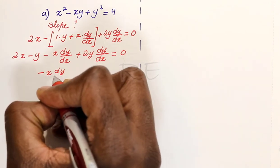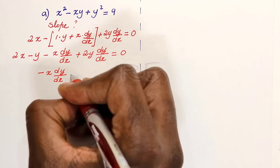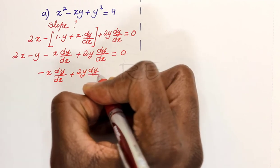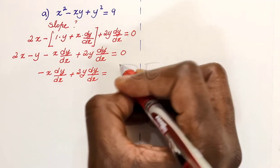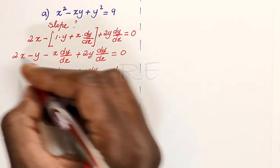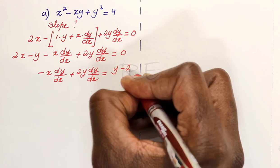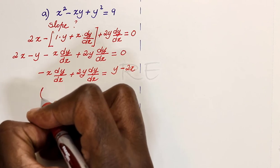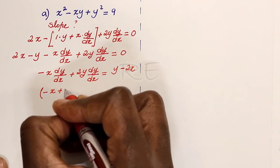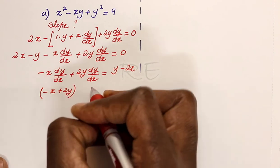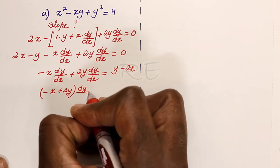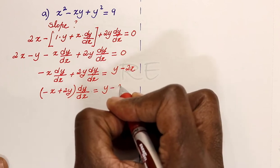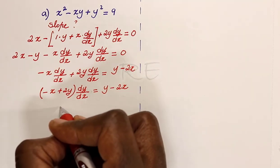We're going to group the dy dx terms: negative x dy dx plus 2y dy dx. We transpose the other terms — negative y becomes y, and 2x becomes negative 2x. Factoring out dy dx, we get negative x plus 2y as the common factor, is equal to y minus 2x.